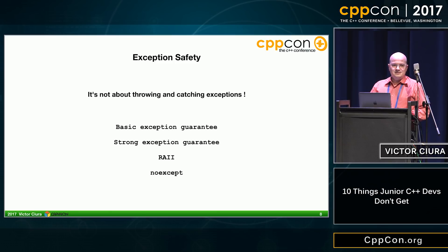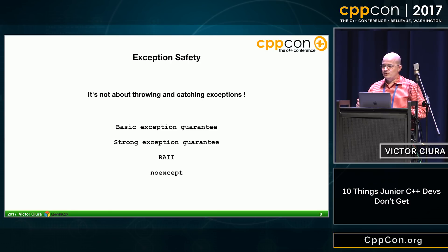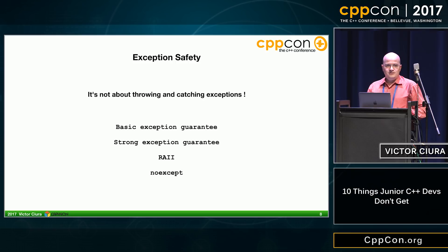Another thing junior developers don't get is exception safety. They think it's all about throwing and catching exceptions — I say no. It's about basic exception guarantee and strong exception guarantee, but also about RAII and noexcept.